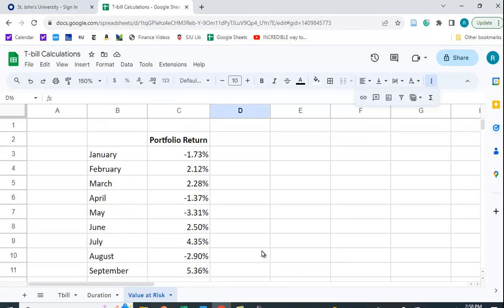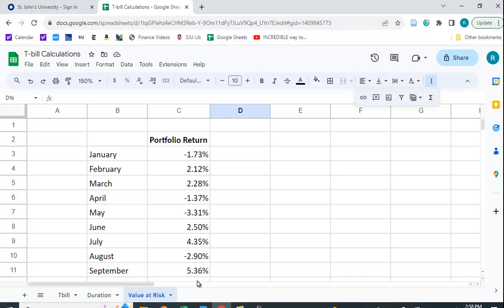We get the average return is 1.09%. Now, it's a small data set, so if we wanted to know what's the worst we could do here, we could just look at all the numbers. It looks like May is the worst month, with minus 3.31%.